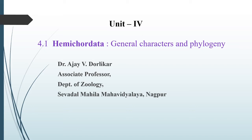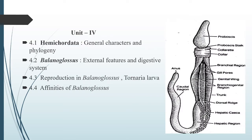Hello everyone, today we will discuss Unit 4. The first topic from Unit 4 is related to Phylum Hemichordata — specifically the general characteristics of Hemichordata. This diagram shows a typical hemichordate, called Balanoglossus.